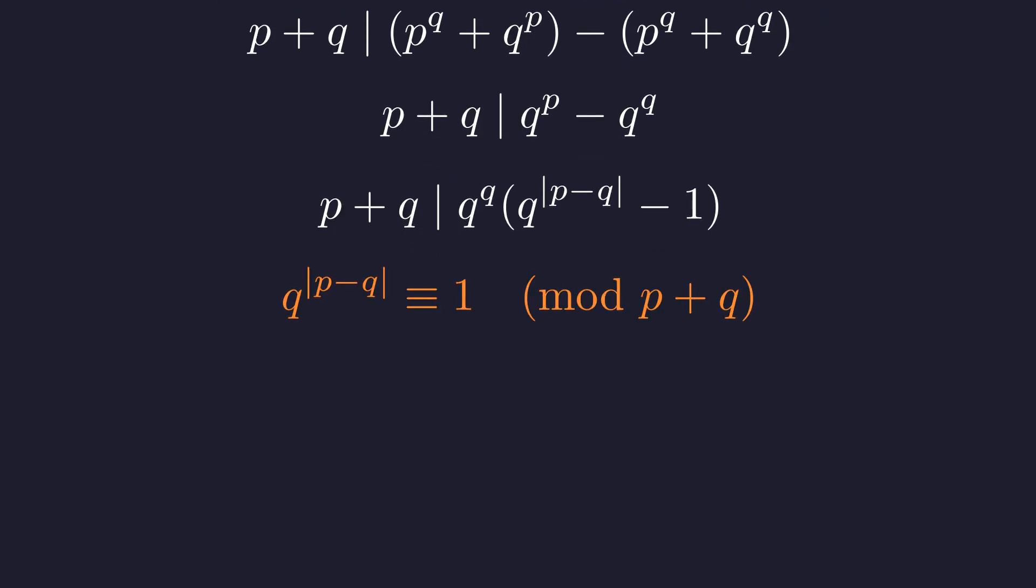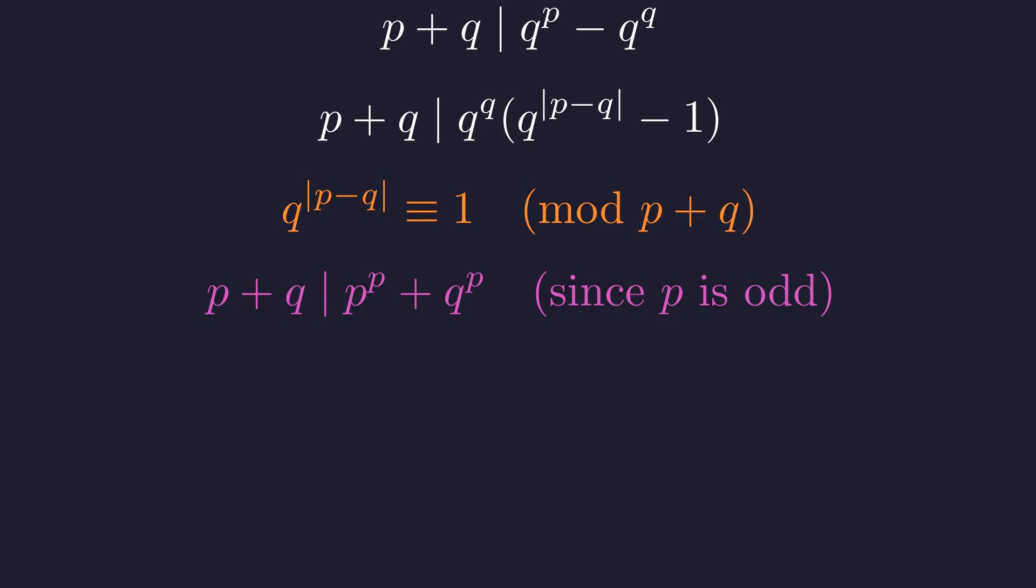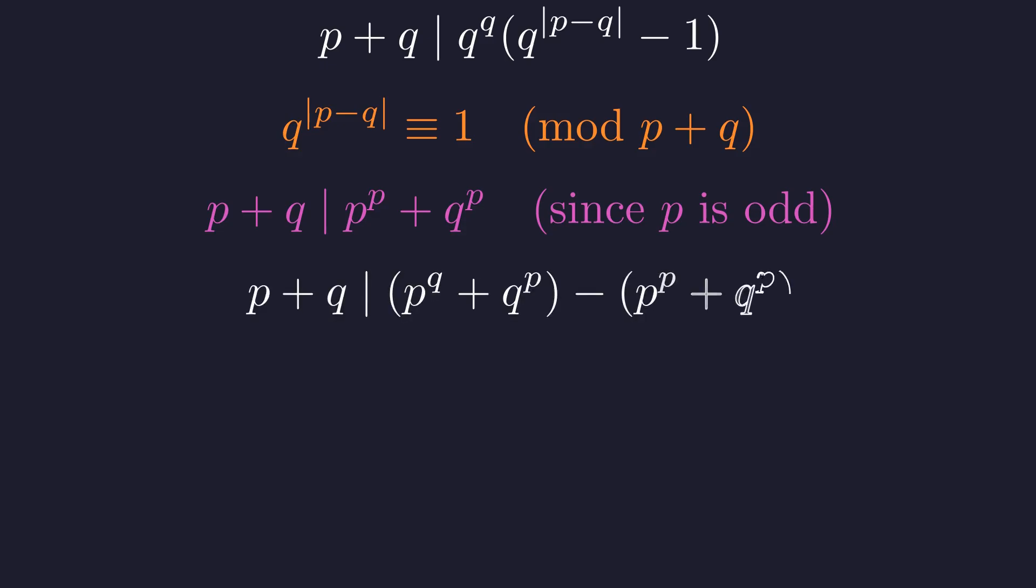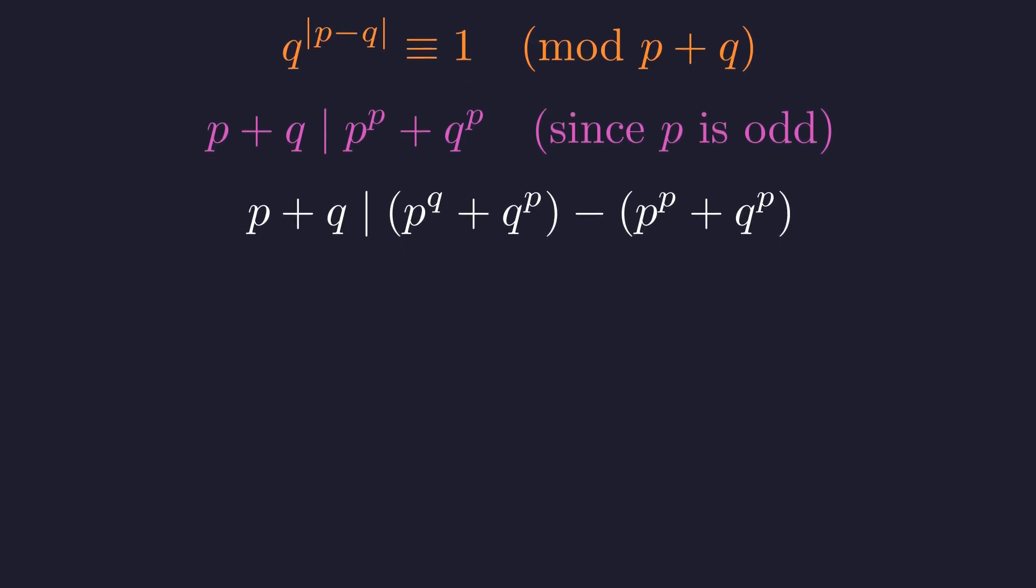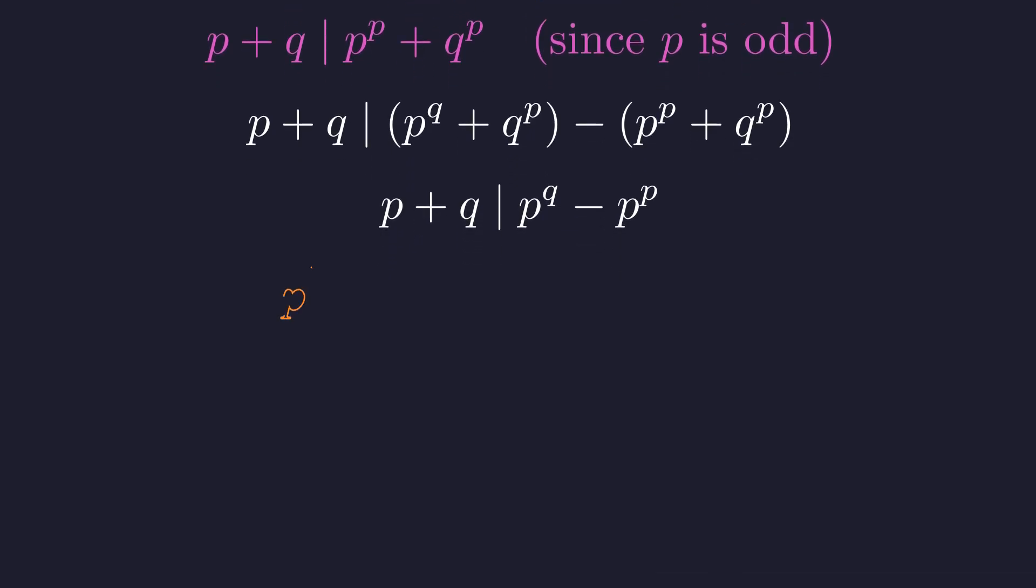But we are not done. The argument is symmetric. Because p is also odd, we can use the same identity again, but with p as the exponent. So, p plus q must also divide p to the p plus q to the p. Subtracting this from our original expression gives a new relationship. This time, the q to the p terms cancel. Following the same factoring logic, we arrive at our second symmetric condition.